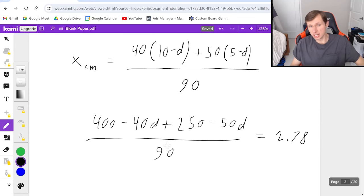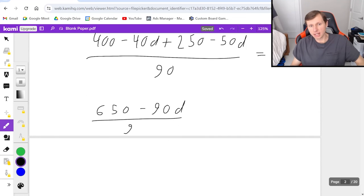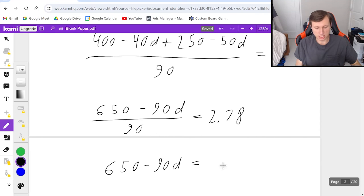And then if I want to solve for d, I'm going to combine like terms first in the numerator. 400 plus 250 is 650. And then negative 40d minus 50d, that's minus 90d divided by 90 equals 2.78. And now the rest of this is algebra. Of course, a lot of my students are not good with algebra. So now I need to multiply both sides by 90 to get rid of that 90 in the denominator.